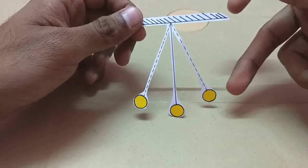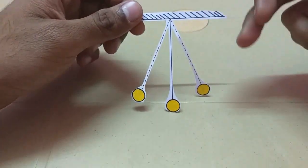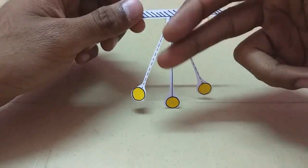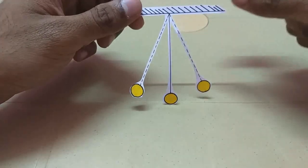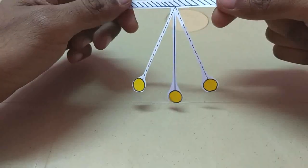Best example would be a simple pendulum. Now when I give the pendulum an initial push, it tends to oscillate by itself without the need for any other external force. Such a system is free oscillation.